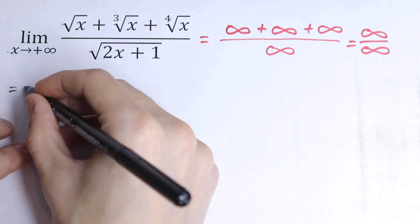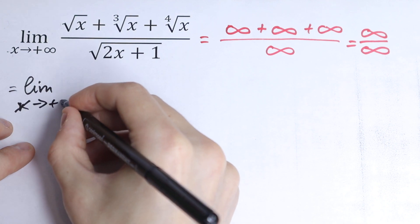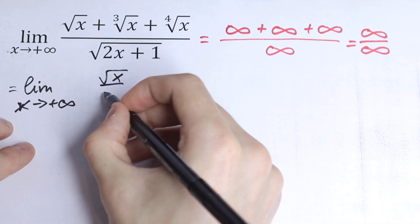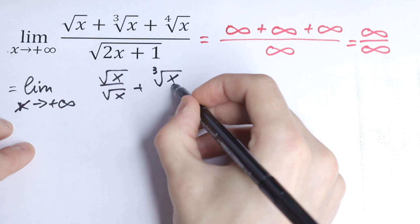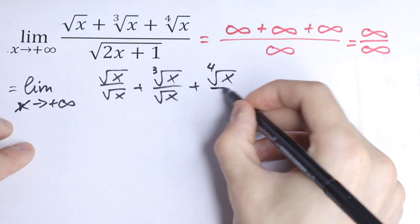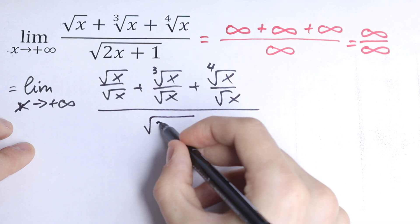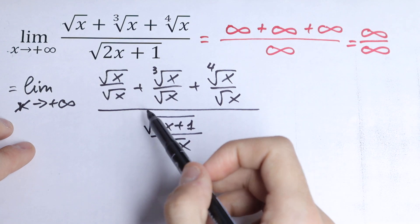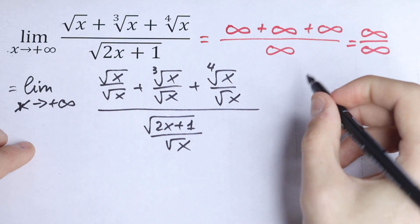So we divide both numerator and denominator by square root of x. As a result we will have: limit as x approaches plus infinity of — in our numerator: square root of x over square root of x, plus cube root of x over square root of x, plus fourth root of x over square root of x — all over square root of (2x plus 1) over square root of x. We just divide numerator and denominator by the highest power of x.